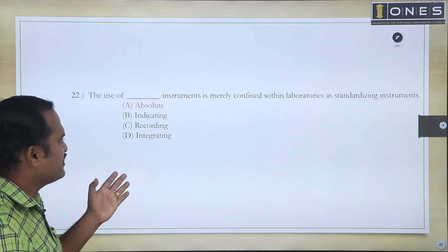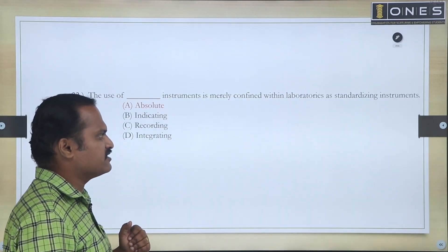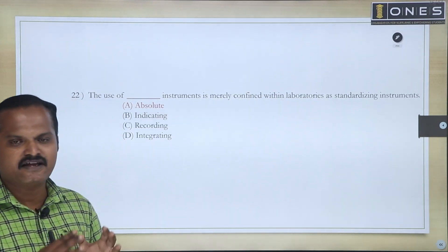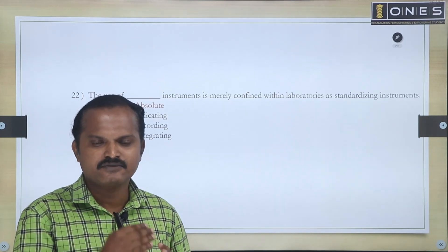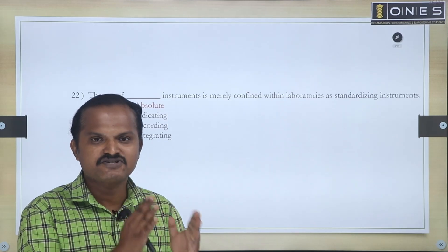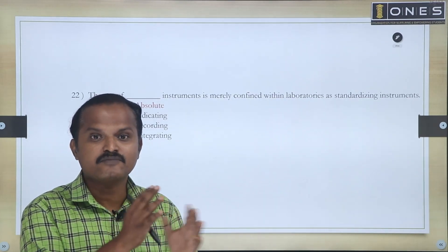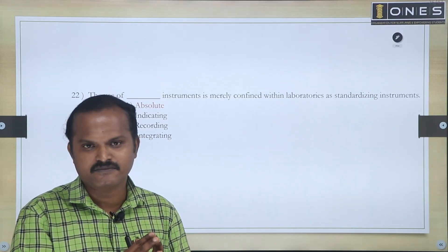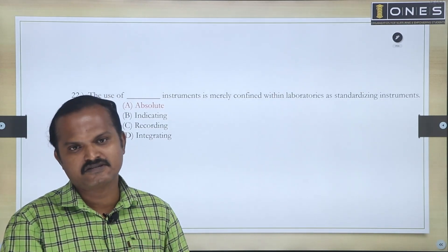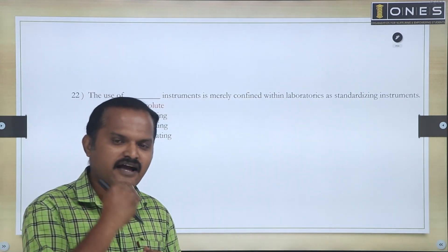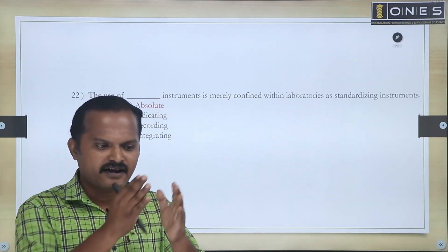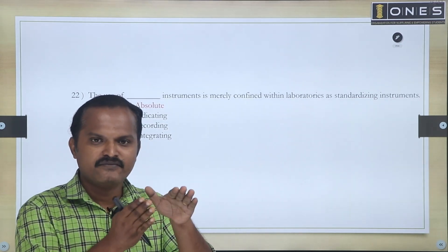Next question: The use of which instrument is merely confined within the laboratories as a standardizing instrument? We have studied instruments and need to classify absolute instruments. In the case of absolute instruments, we are actually measuring the quantity with the help of some constants. For example, the tangent galvanometer — it is a perfect example of an absolute type instrument, where we calculate the unknown quantity using constants. This is a direct measurement.